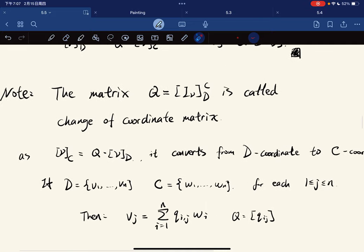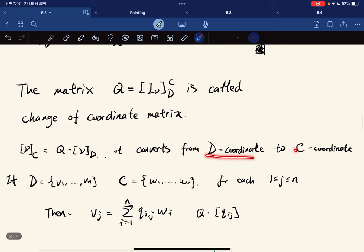Note that the matrix Q is called a change of coordinate matrix, as it converts from D coordinates to C coordinates.